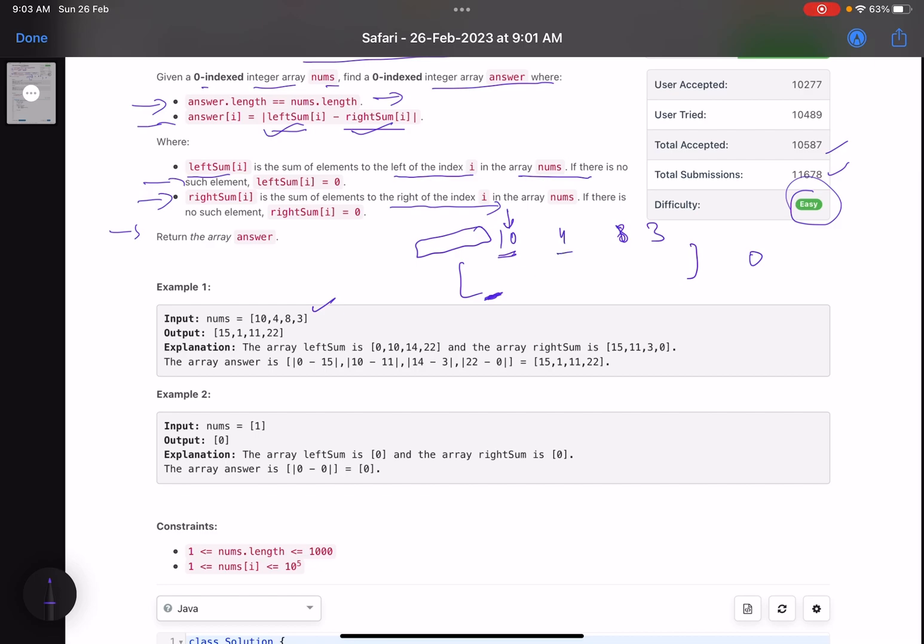What is the right sum for this? It is 4 plus 8 plus 3. So this is 15. So you do 0 minus 15 and take the absolute value. That means remove the negative sign if there is. So the answer will be 15 here.